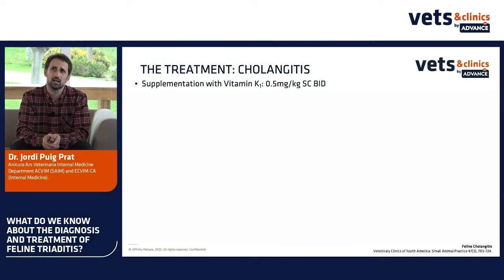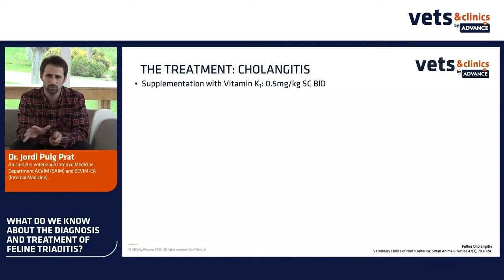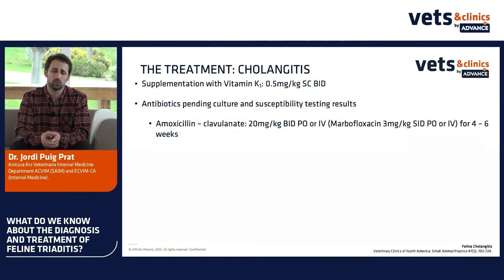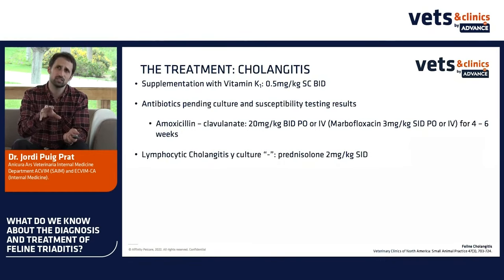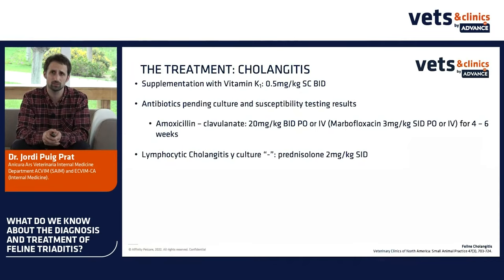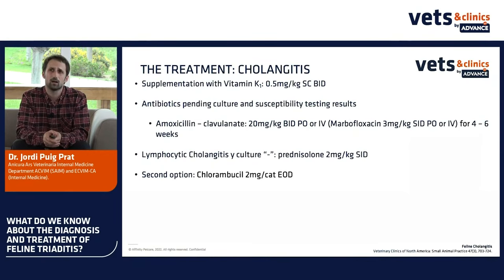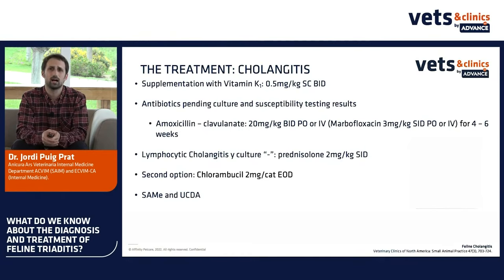For cholangitis treatment, we usually start with vitamin K — remember about vitamin K deficiency in these cats, especially before taking biopsies or cytology. While waiting for results, particularly with suspected neutrophilic cholangitis, we can start with antibiotics. For cats with lymphocytic cholangitis where culture is negative, we recommend starting with steroids — prednisolone 2 mg/kg once daily is a good option. If there is poor outcome or unacceptable side effects, the second option is chlorambucil 2 mg per cat every other day. You can give antioxidants or UDCA, but remember to avoid polypharmacy because pilling these cats can be difficult.